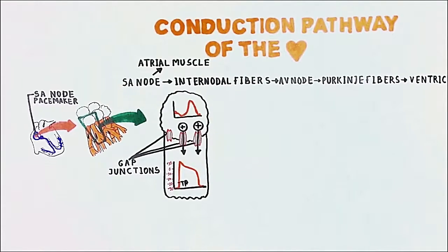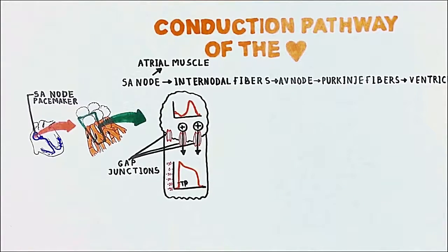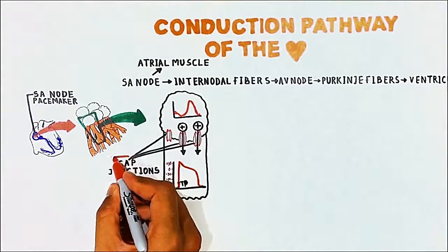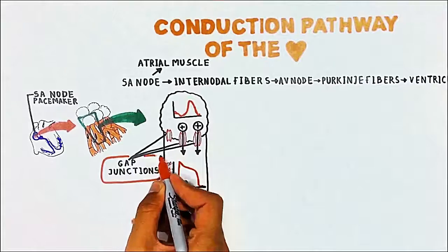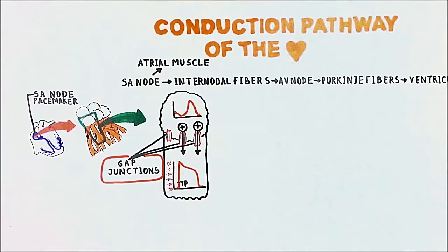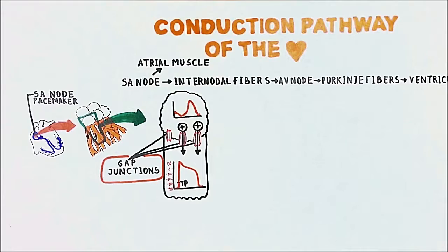All cells in a heart are connected with each other through these gap junctions. Therefore, we say that the cardiac muscle is a syncytium in which the cardiac muscle cells are so tightly bound that when one of these cells is excited, the action potential spreads to all of them and allows synchronized, coordinated contraction of the heart.